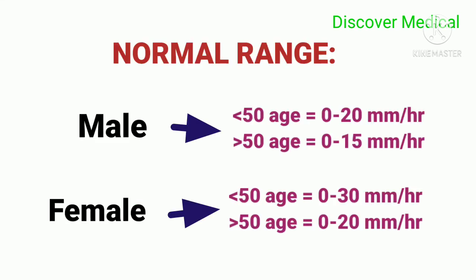The normal range for males over 50 years of age is 0 to 20 mm per hour, and for males under 50, it is 0 to 15 mm per hour. For females over 50, it is 0 to 30 mm per hour, and for females under 50, it is 0 to 20 mm per hour.